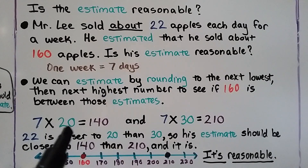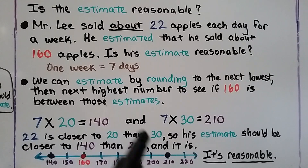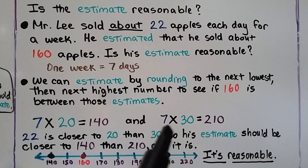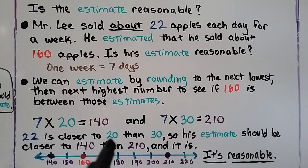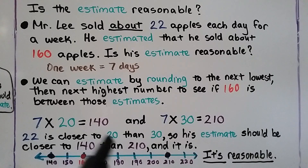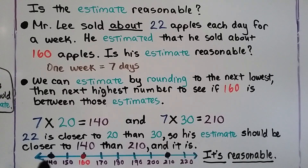We can round 22 to 20 — the next lowest. 7 times 20 equals 140. We can round up to 30: 7 times 30 equals 210. Now 22 is closer to 20 than it is to 30, so his estimate should be closer to 140 than to 210. His estimate was 160 — here's 140 on a number line and here's 210 way over. 160 is closer to 140, so it is a reasonable estimate.